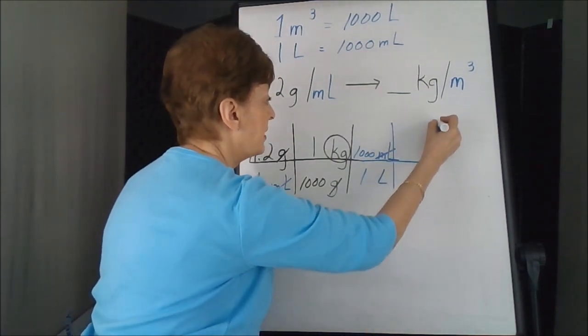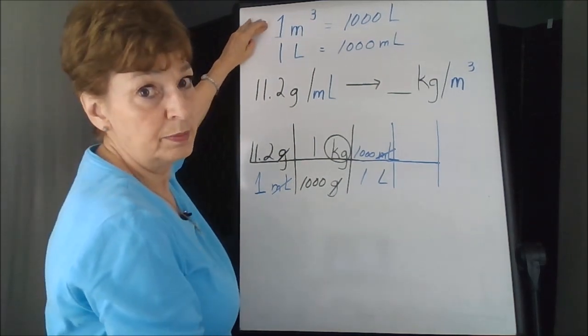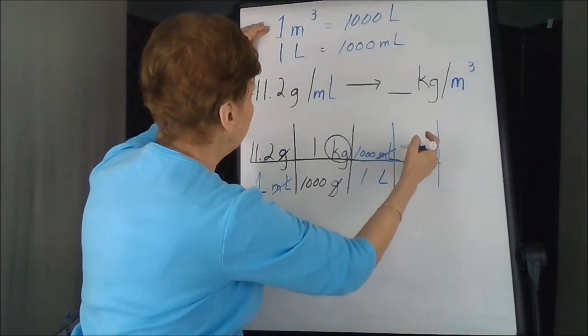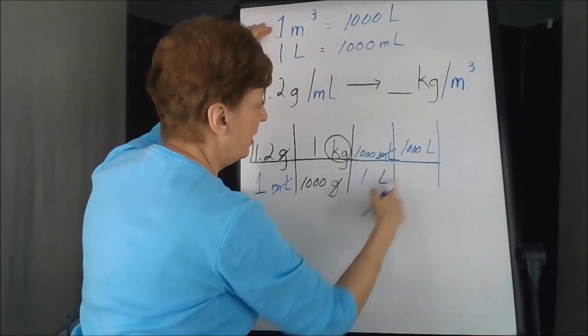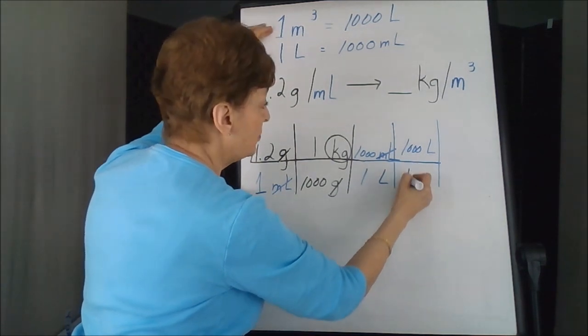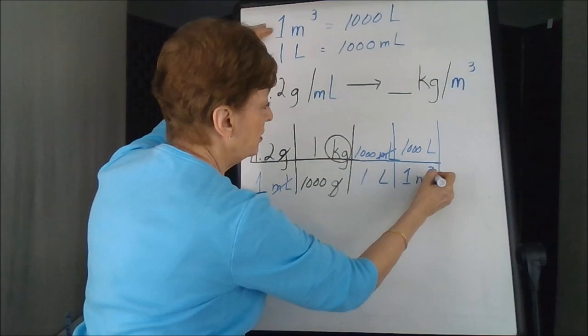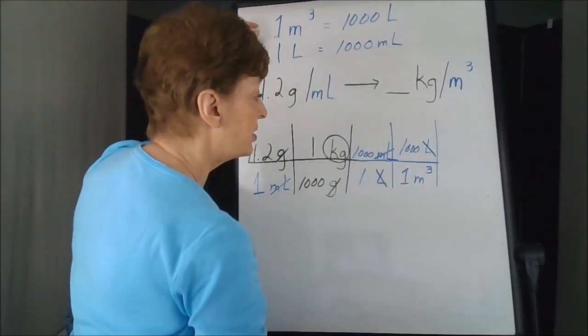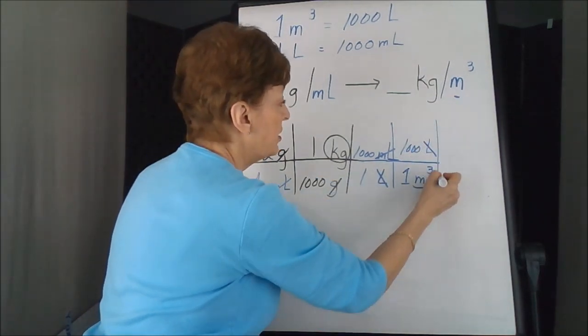So another box has to be done. Going back to the special conversion piece that I just gave you, 1,000 liters, that's on top, is the same as 1 meter cubed. I can cross out my liters, and this is the label that I need, so I'm going to circle that.